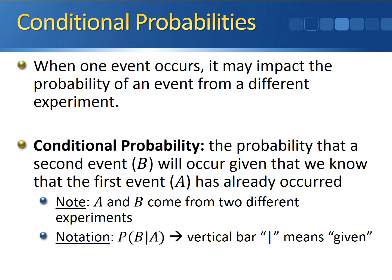The notation for a conditional probability is the probability of B given A. The event you're looking for the probability of comes first, then we write a vertical bar — which you read as the word 'given' — and event A comes after the vertical bar. Event A is the event that has already occurred. So P(B|A) is the probability that event B will occur, given that we already know event A has occurred.